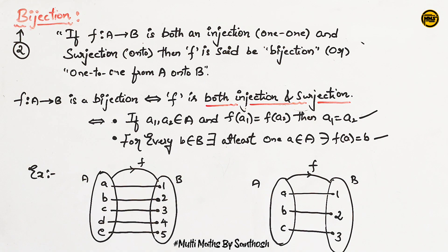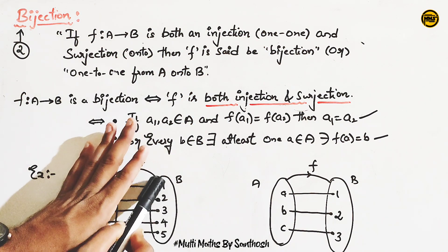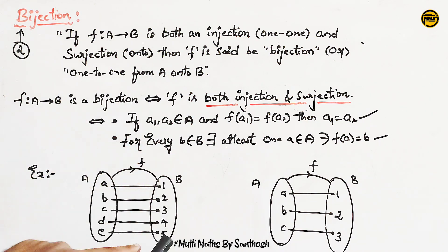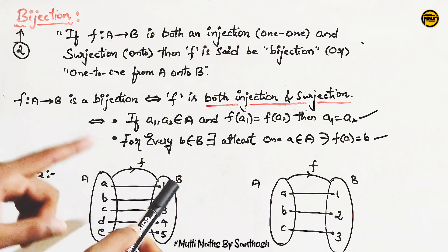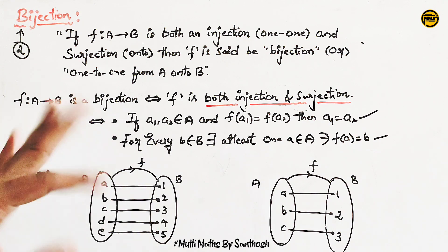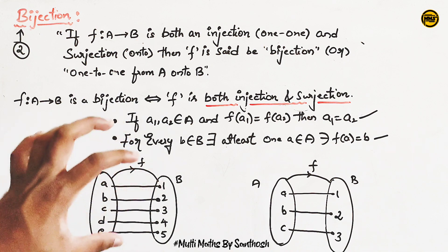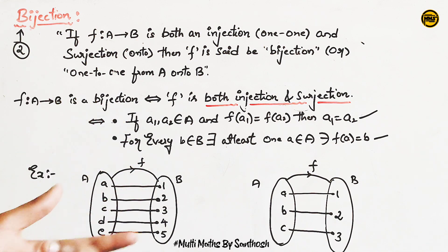If you are looking at a bijection, there are five elements. This is both injection and surjection, so completely this is a bijection.